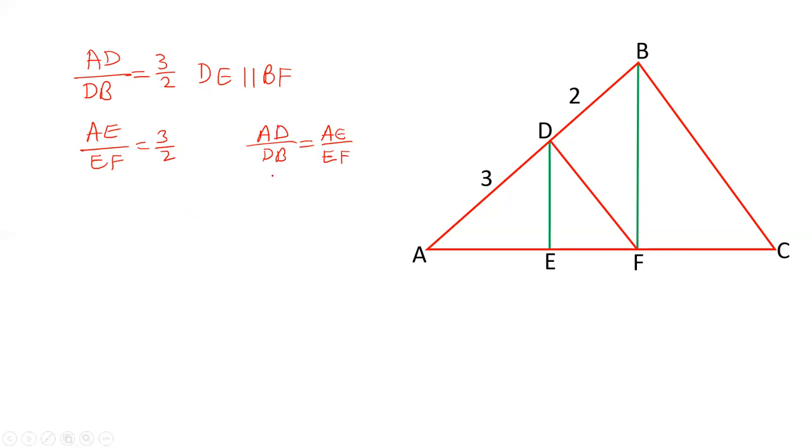So, AE upon EF is 3 is to 2. And I am writing this length is equal to 3y and 2y. The length of AE is 3y. Length of EF is 2y.